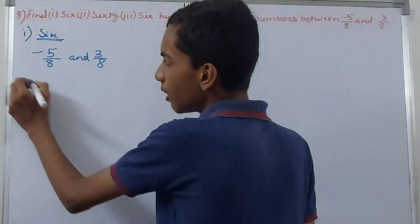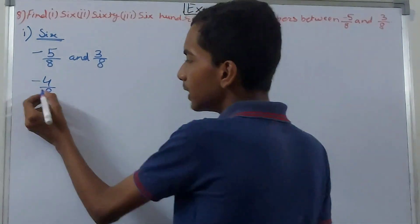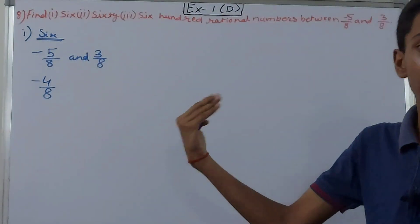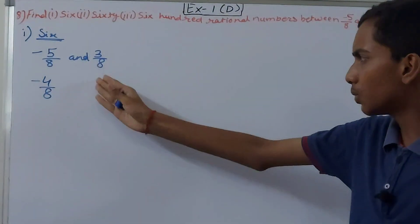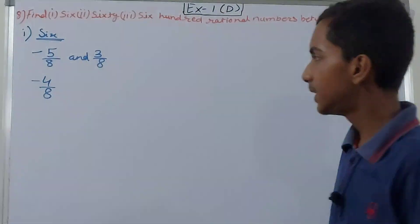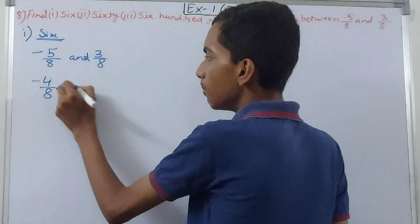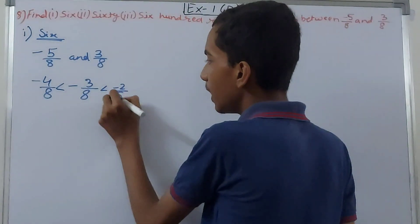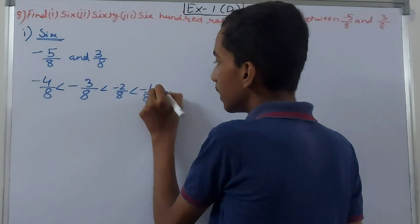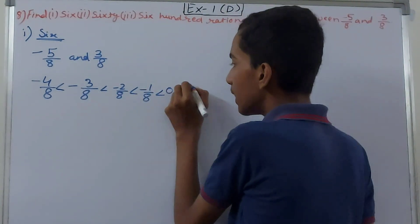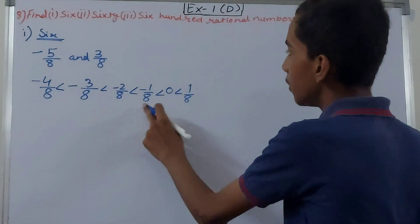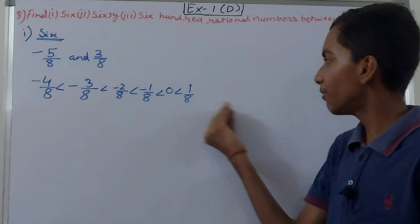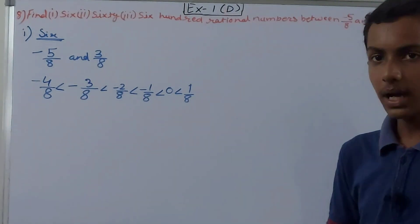We start not from -5/8 but from the number right after it — that is -4/8 — which is one step to the right on the number line. So the first number is -4/8, then -3/8, then -2/8, then -1/8, then 0, then 1/8. How many? 1, 2, 3, 4, 5, 6 — that's 6 numbers! You can also take numbers after 1/8, such as 2/8, 3/8, 4/8 — that is not wrong.